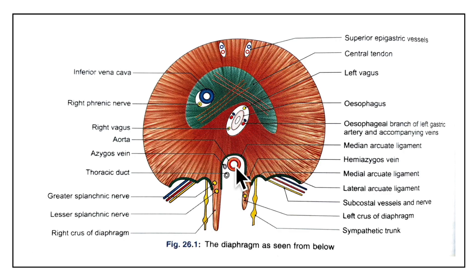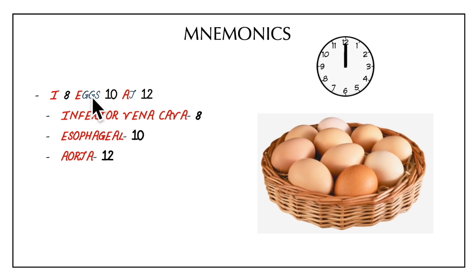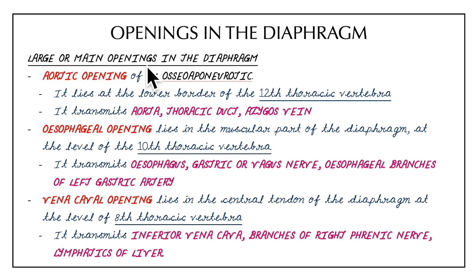To remember: the aortic opening is at the 12th thoracic vertebra, the esophageal opening at the 10th thoracic vertebra, and the vena caval opening at the 8th thoracic vertebra. There is a useful mnemonic: I8X10H12 — 'I' stands for the inferior vena caval opening at T8, 'E' for the esophageal opening at T10, and 'A' for the aortic opening at T12.